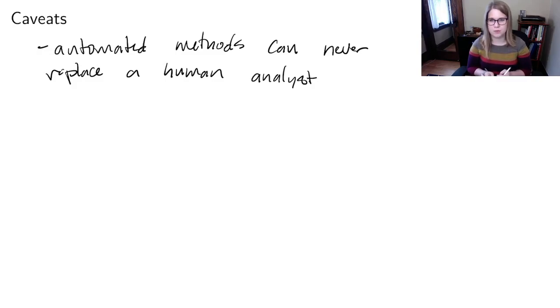You need a person in the loop to be looking for things like multicollinearity, to be thinking about whether the results make sense, to be thinking about things like interactions, which these methods can't take into account. To think about if it makes sense in terms of the interpretability. Sometimes you want to have a smaller model because it's easier to explain to people.